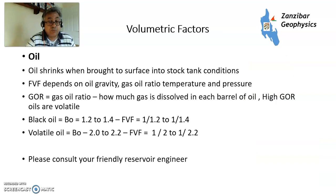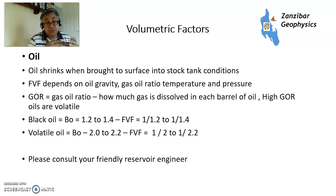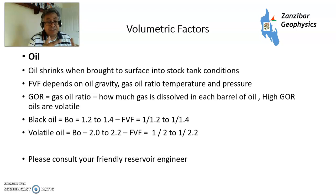When you bring oil or gas to surface, it changes. Oil shrinks and gas expands. Oil tends to shrink because it loses heat and some dissolved gas comes out of solution — that's characterized by the gas-oil ratio. Black oil, which is the most common type, has a formation volume factor of 1.2 to 1.4, so you divide by 1.2 or 1.4. Volatile oils, which have more associated gas, can shrink much more — their formation volume factor can range from 1.5 to 2.2. It's best to consult your reservoir engineer about what volumetric factors to use, and use a wide range when you don't know.